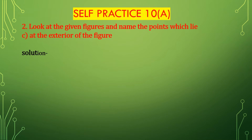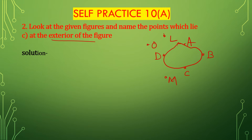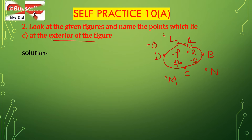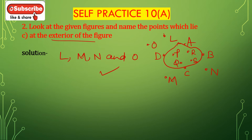Now third bit C: name the points which lie at the exterior of the figure. First draw the figure. This figure is given with points A, B, C, D, L, O, M, N, P, Q, R, and S. Exterior means the points which are outside of this given figure. The outside points are L, O, M, and N. So L, M, N, and O — these four points lie outside the figure and are the exterior points.